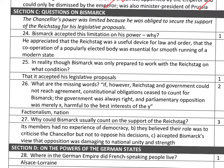Moving into Section C. The Chancellor's power was limited because he was obliged to secure the support of the Reichstag for his legislative proposals. Bismarck accepted this limitation because he appreciated that the Reichstag was a useful device for law and order, and that the cooperation of a popularly elected body was essential for smooth running. Question twenty-five: in reality, Bismarck was only prepared to work with the Reichstag on the condition that the Reichstag accepted his legislative proposals.